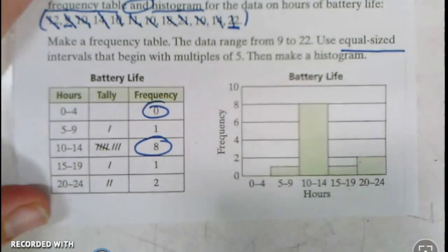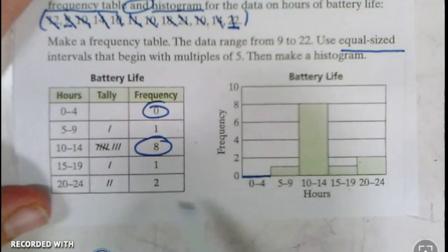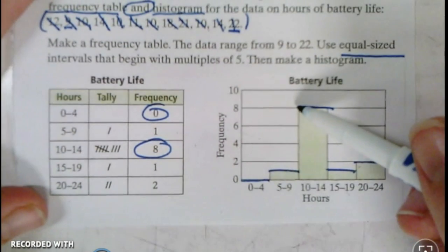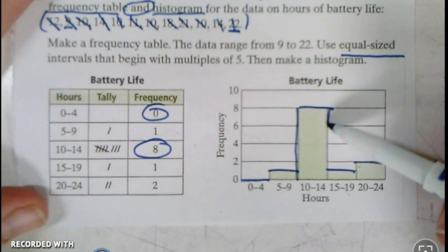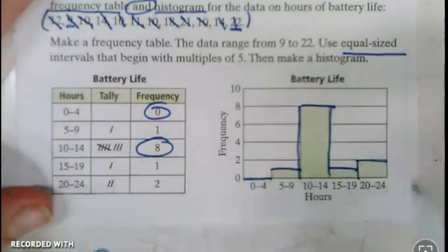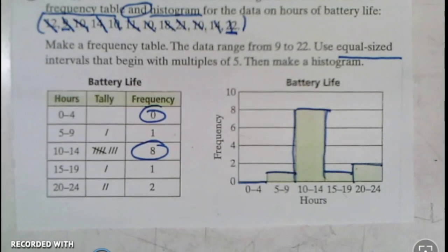Then I just mark where each thing is. In zero to four, it was zero. In five to nine, it goes to one. In 10 to 14, eight. In 15 to 19, one. In 20 to 24, two. They're all going to bump into each other with a histogram—there's no spaces between them. Make sure you put your title up top and you're done. This is what a histogram is.